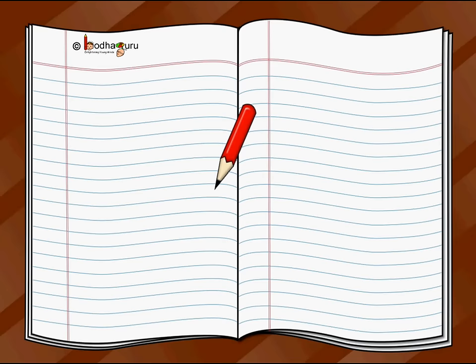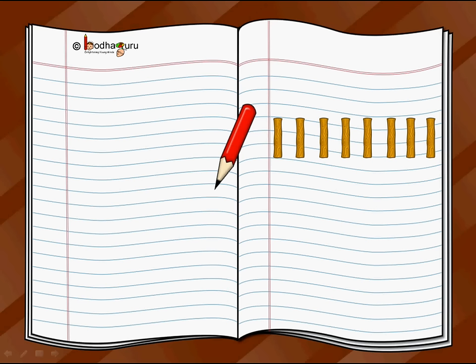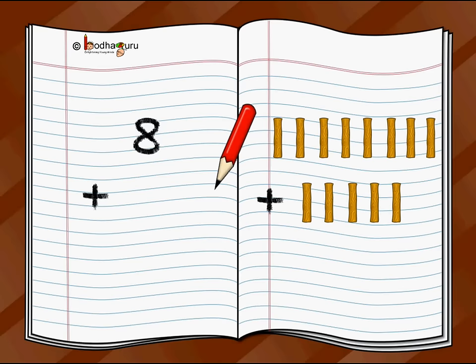Now one last example. Let's say I have eight sticks: one, two, three, four, five, six, seven, eight sticks. And I got, like Bola in that story video, five more sticks: one, two, three, four, five.